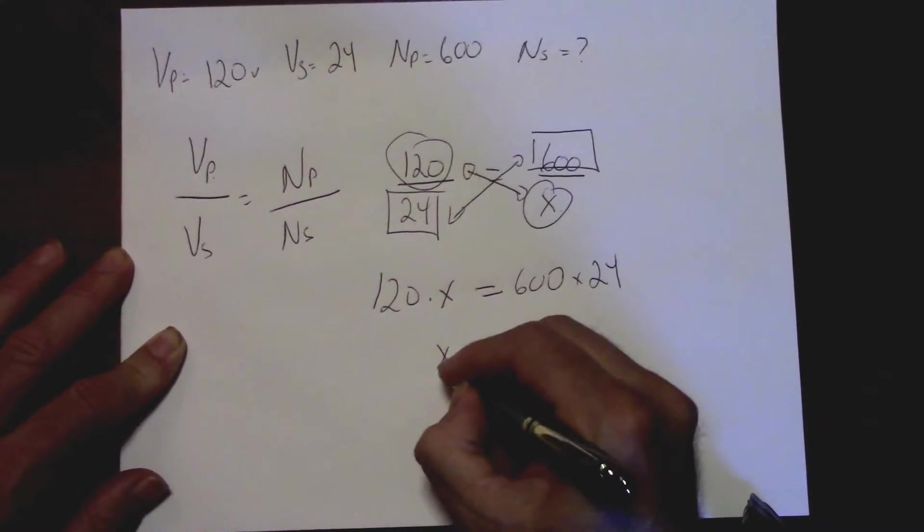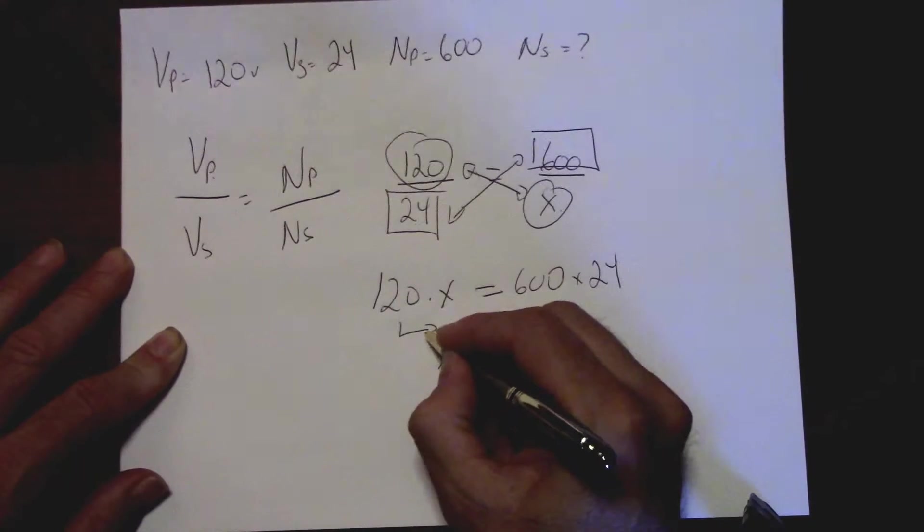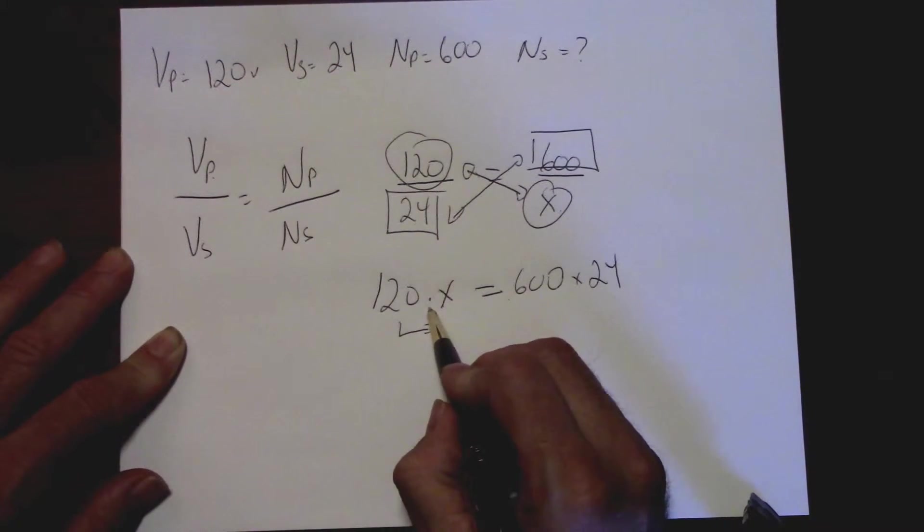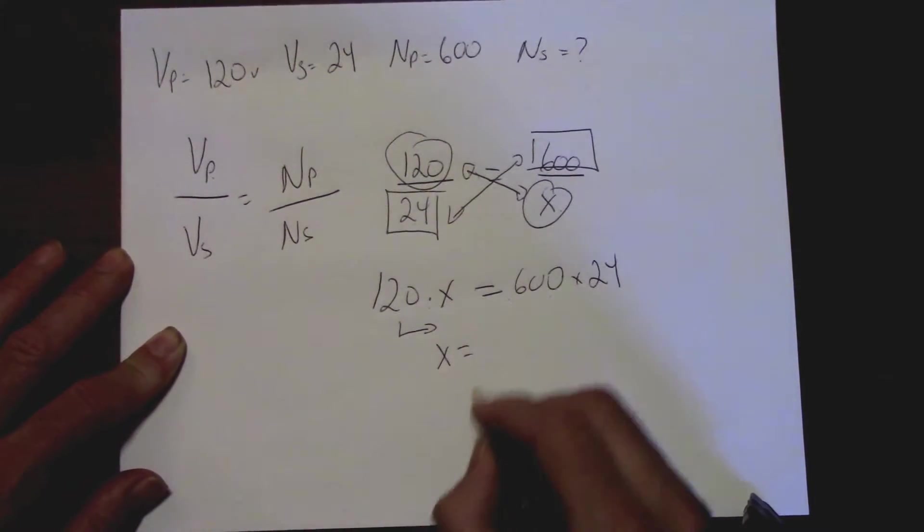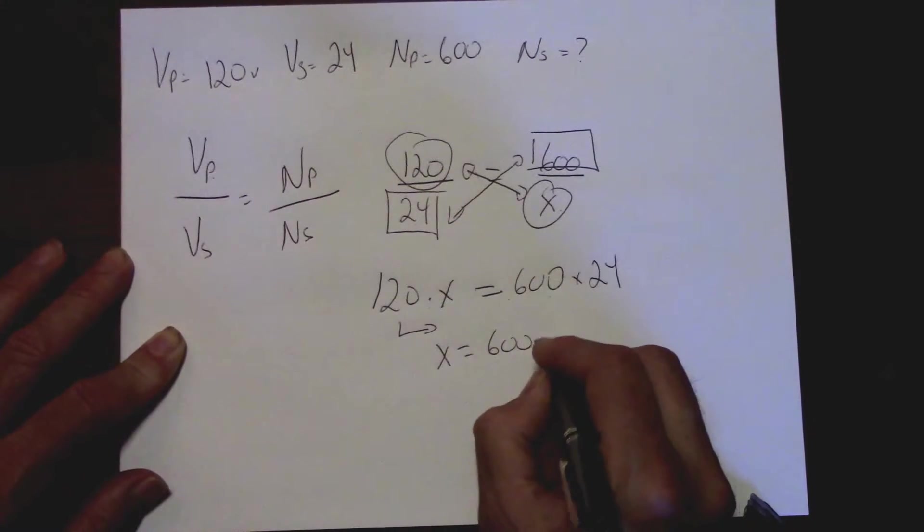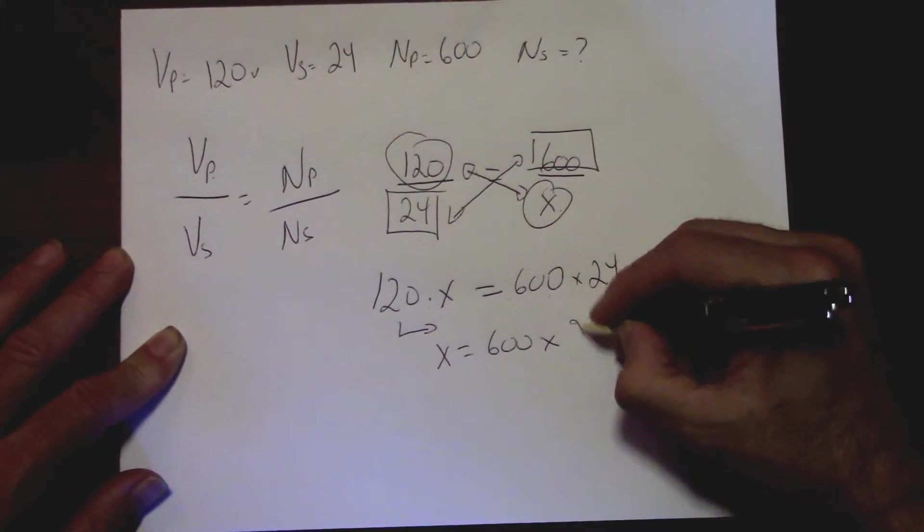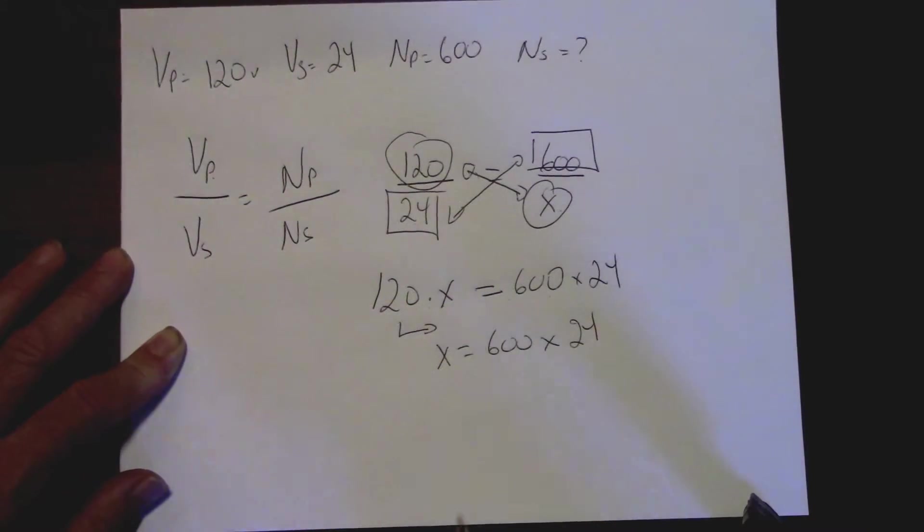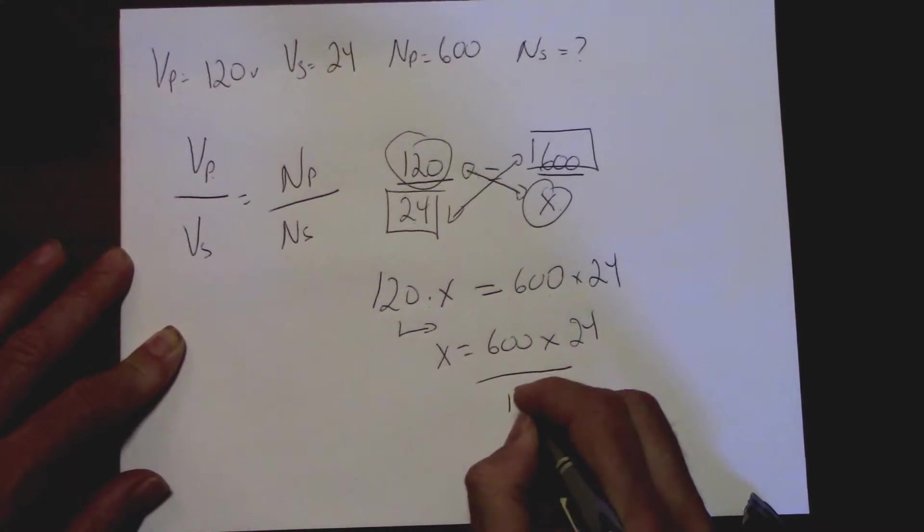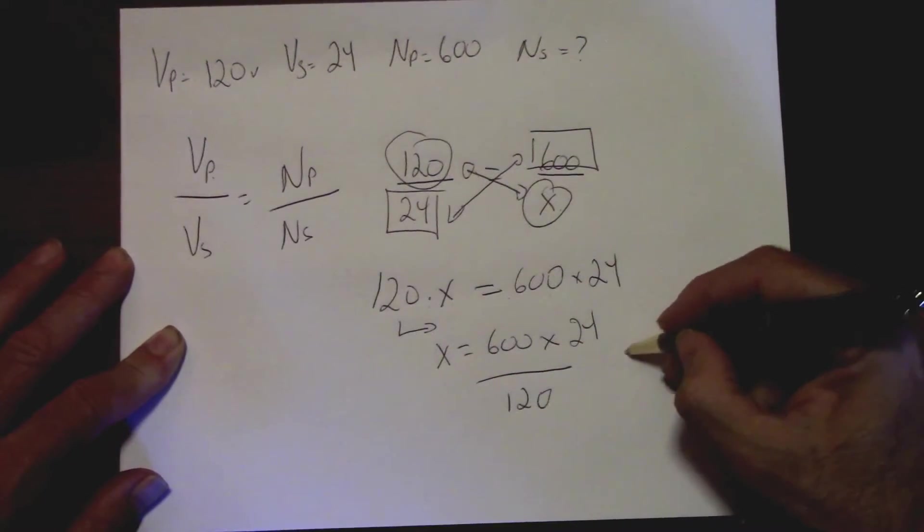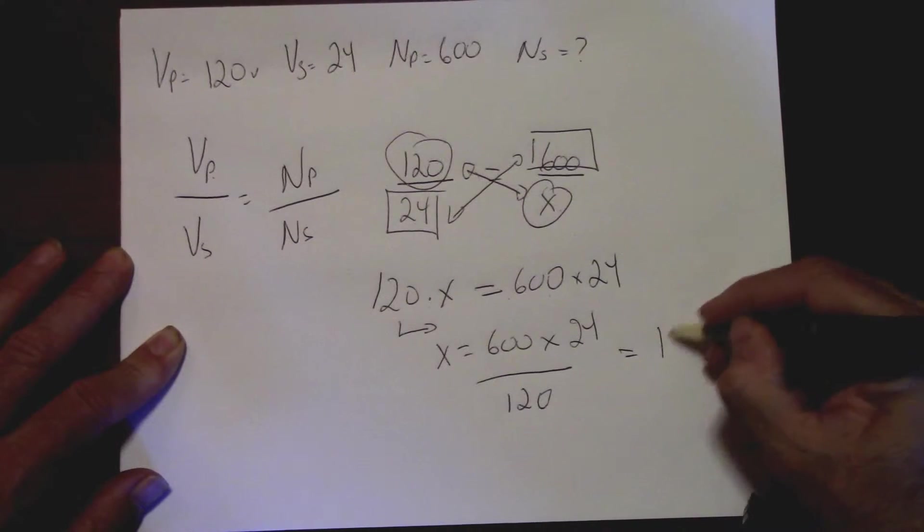So 600 now becomes multiplied by the 24. X equals, 120 is coming across the equal sign. It's multiplying here, must divide, equals 600 times my 24 divided by my 120. That will give you 120.